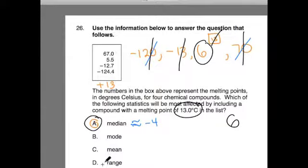Very quickly, these other options here. The mode is a number that appears the most. In the data set, there's no number that repeats. It's not like we have four negative 13s. So the mode, the number that repeats, there is no number that repeats, so it's not affected in either of the data sets. I cross it out.